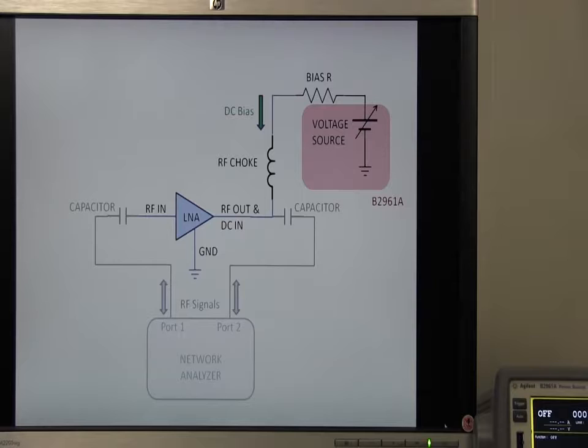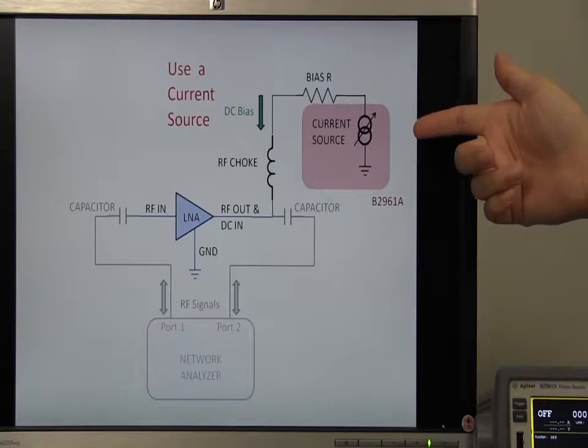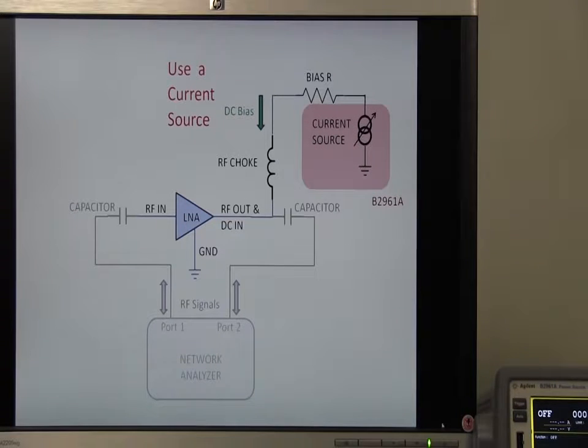So, what is the best way to bias the amplifier? The answer is very simple and straightforward. Just use a current source instead of a voltage source.